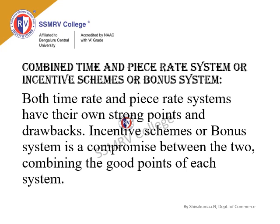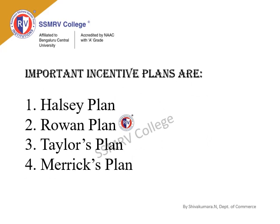The third method is the Combined Time and Piece Rate System, also called incentive schemes or bonus schemes. Both time rate and piece rate systems have their own strengths and problems. Incentive or bonus schemes represent a compromise between the two, combining the good points of each. There are four important incentive plans: Halsey's Plan, Rowan's Plan, Taylor's Plan, and Merrick's Plan. As per Bangalore Central University syllabus, only Halsey's Plan, Rowan's Plan, and Taylor's Plan are covered.